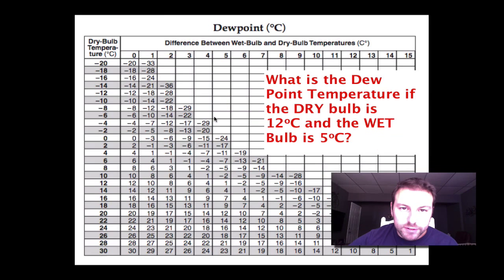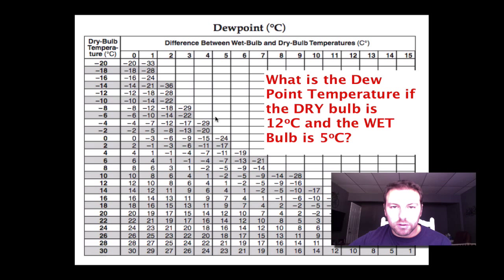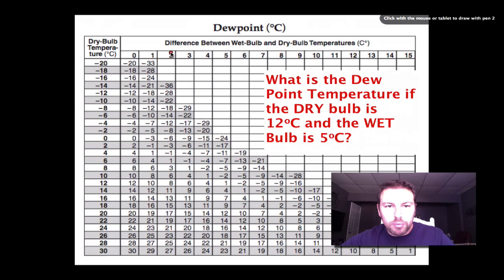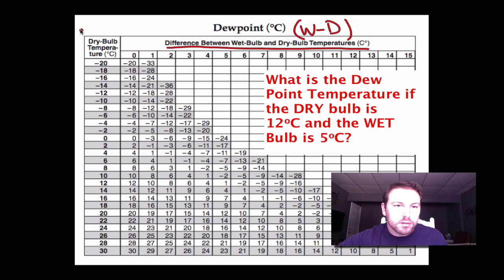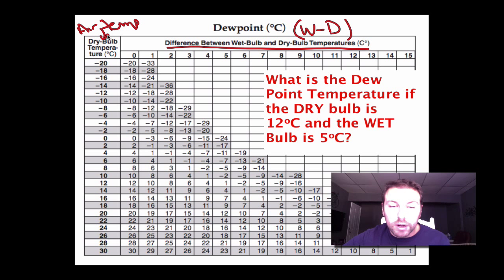If we open up our reference table, we can find the dew point and relative humidity chart. This chart is used with the sling psychrometer. Remember, the sling psychrometer has a wet bulb and a dry bulb. From the difference between the wet bulb and dry bulb — found at the top of the chart — and using the dry bulb temperature on the left side (which is the same as your air temperature), we're able to find both dew point and relative humidity.